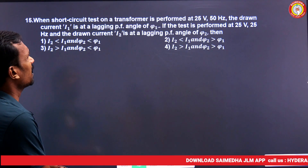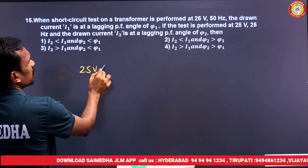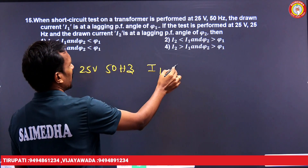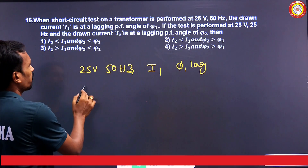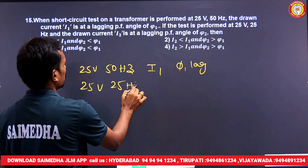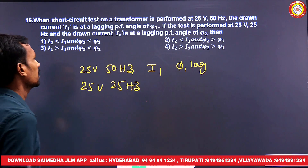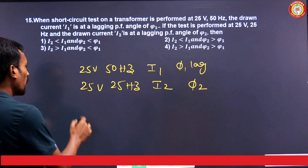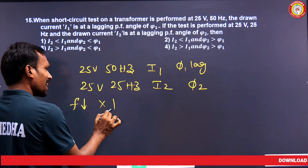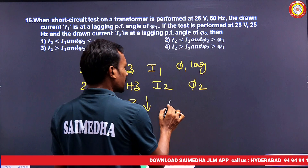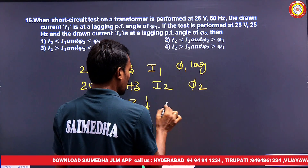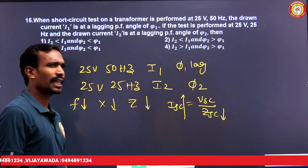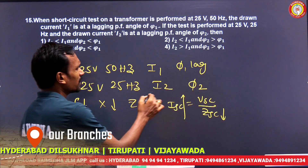Next question: when a short circuit test on a transformer is performed at 25 volts, 50 Hz, the drawn current is I1 lagging at power factor φ1. If the test is performed at 25 volts, 25 Hz (reduced frequency), the current is I2 and power factor angle is φ2. When frequency reduces, reactance reduces, impedance reduces. Since short circuit current Isc = Vsc / Zsc, when Zsc reduces, the short circuit current increases.